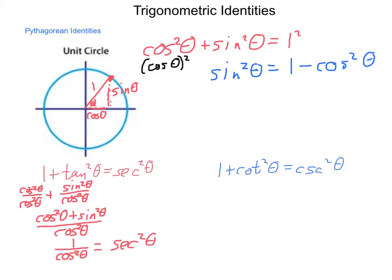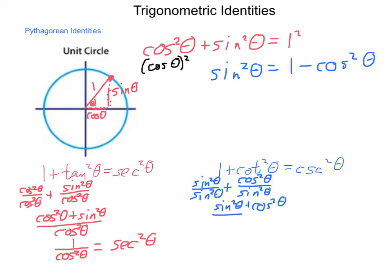Now let's do the same for 1 plus cotangent squared of theta equals cosecant squared of theta. Cotangent squared of theta is the reciprocal of tangent squared, so it equals cosine squared theta over sine squared theta. And 1, conveniently this time, equals sine squared theta over sine squared theta. Combining these, I get sine squared theta plus cosine squared theta over sine squared theta. Using the Pythagorean identity, that gives us 1 divided by sine squared of theta, which by definition is cosecant squared of theta.